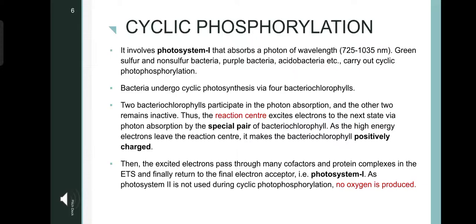Photophosphorylation, which means conversion of ADP and inorganic phosphorus into ATP, involves light and which can be of two types: cyclic phosphorylation and non-cyclic phosphorylation. Cyclic phosphorylation involves photosynthesis system 1 that absorbs a photon of wavelength 725 to 1335 nanometers. Green sulfur bacteria, non-sulfur bacteria, purple bacteria, and acidobacteria carry out cyclic photophosphorylation. The bacteria undergoes cyclic photosynthesis via four bacteriochlorophylls, out of which two bacteriochlorophyll participate in the photon absorption and the other two remains inactive. Thus, the reaction center excites the electrons to the next state via photoabsorption by the special pair of bacteriochlorophyll. As the high energy electrons leave the reaction center, it makes the bacteriochlorophyll positively charged.